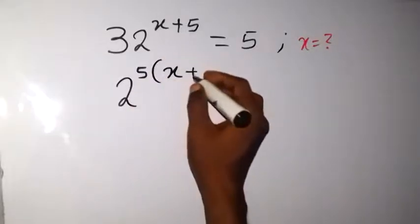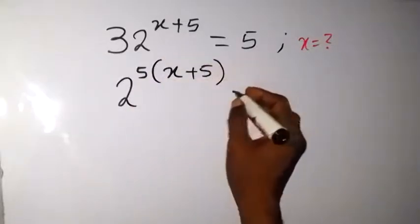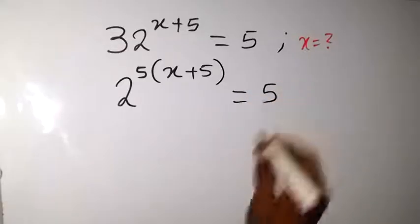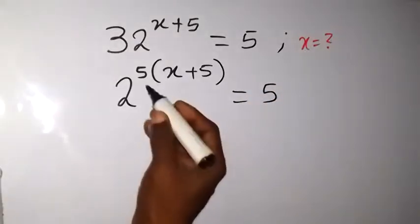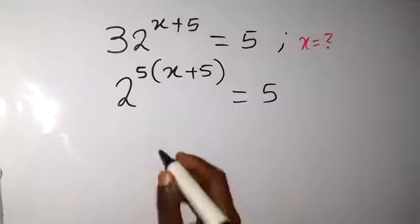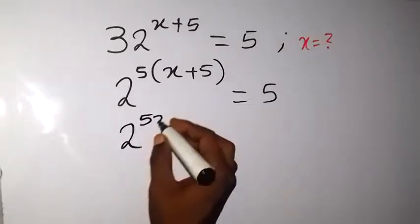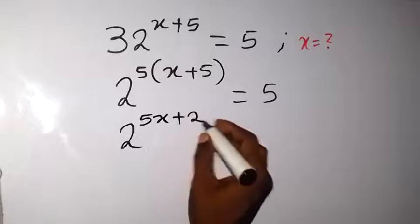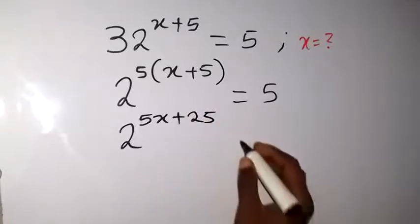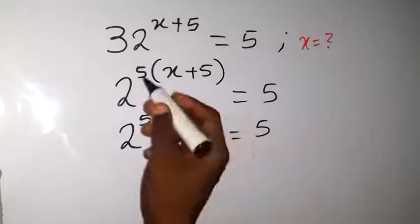Into bracket x plus 5, then equals to 5. We see a 5 here, then this power can multiply and open that bracket. So we have 2 raised to power 5x plus 25, then equals to 5. We have used this 5 to multiply.